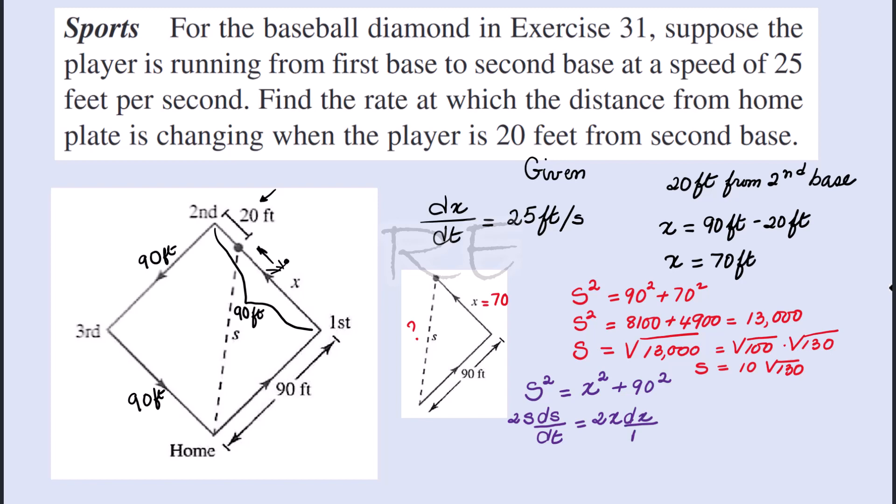2s(ds/dt) = 2x(dx/dt). The derivative of 90² is 0—this is a constant. We cancel the 2, and ds/dt will be found by dividing: ds/dt = (x/s)(dx/dt).